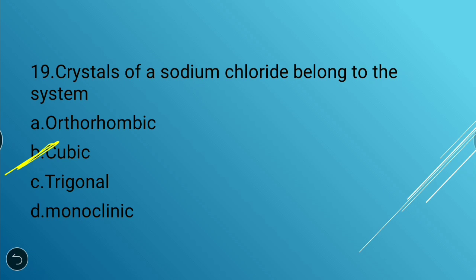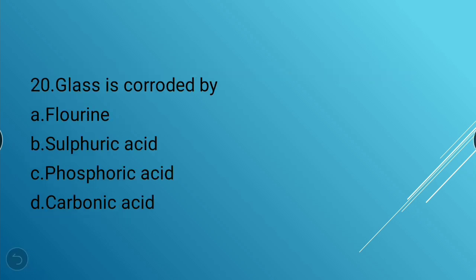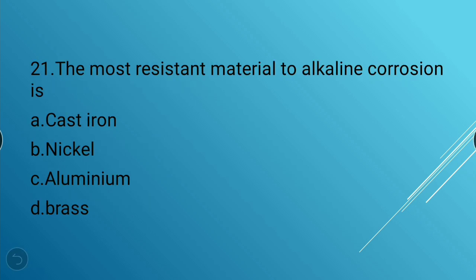Next question: Glass is corroded by — option A: fluorine, option B: sulfuric acid, option C: phosphoric acid, or option D: carbonic acid. The answer is fluorine — glass is corroded by fluorine.